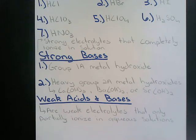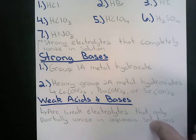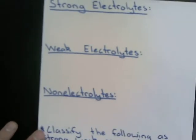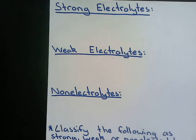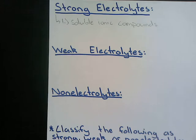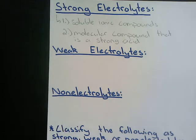Now we can talk about electrolytes. A strong electrolyte has two categories: number one, they are soluble ionic compounds; and number two, if we have a molecular compound that is a strong acid. An example would be sulfuric acid or nitric acid — those are molecular compounds but they're one of the strong acids, so they would be strong electrolytes.